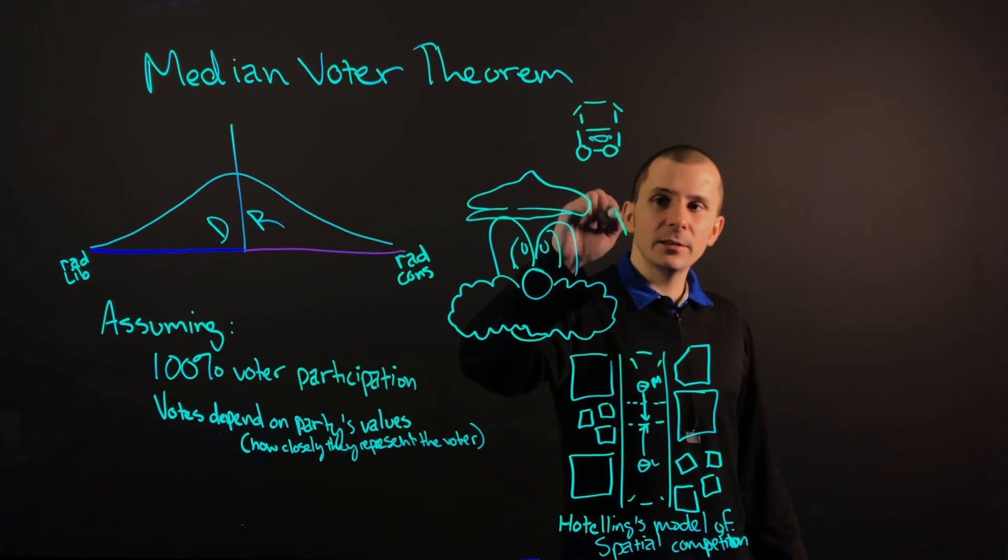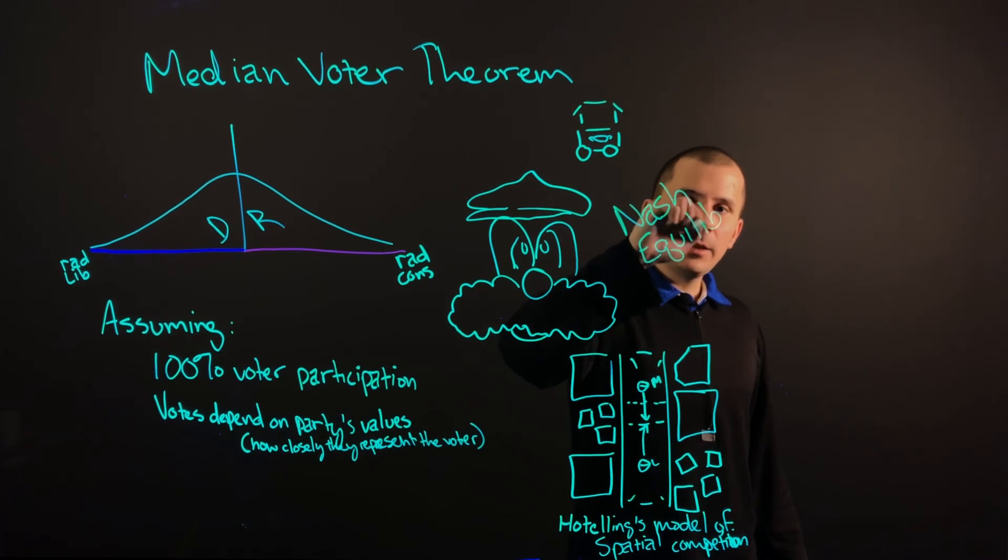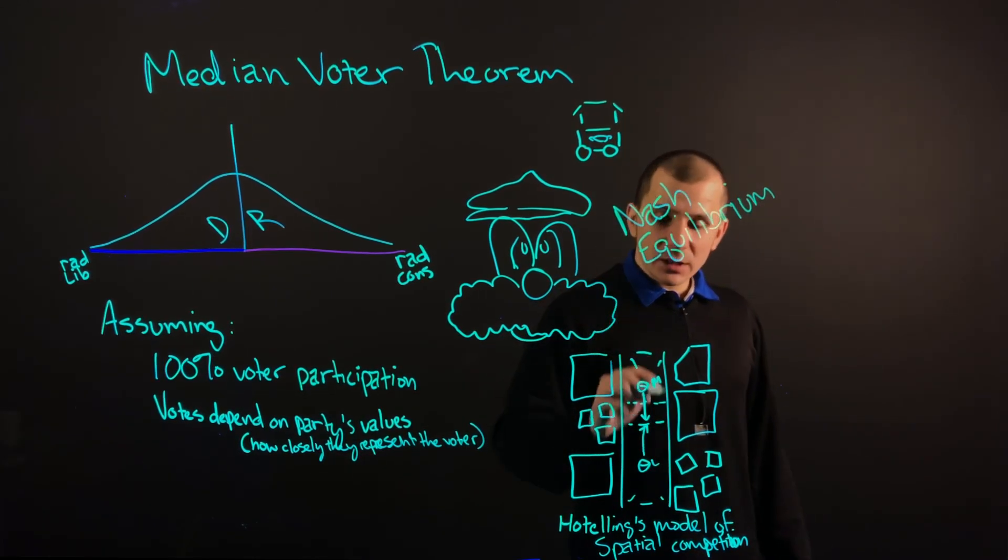Which I will write down here so that we remember it: Nash Equilibrium. Try not to forget this. And what we've just described here with Mario and Luigi splitting the market down the middle and putting their two hot dog stands right here on the edge, which while not a socially optimal solution, does achieve Nash's Equilibrium.